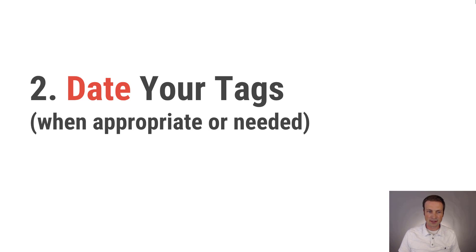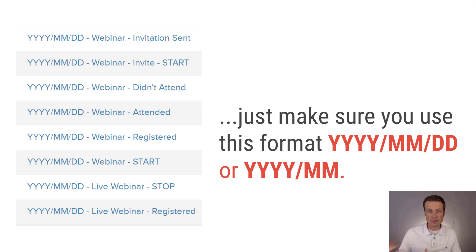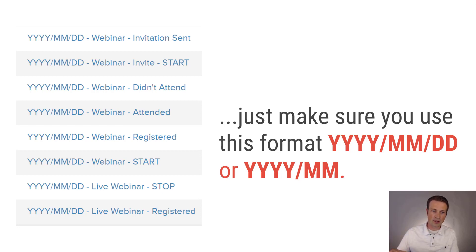Number two is to date your tags. If it's relevant, put a date on it so you can remember what it was about — this gives you more context when looking at tags two or three years from now. For example, if you're running a lot of live webinars, put the year first, then month, then day. This way Infusionsoft alphabetizes and groups them together — all years together, then all months — rather than mixing June 2014 and June 2016 in the same group.